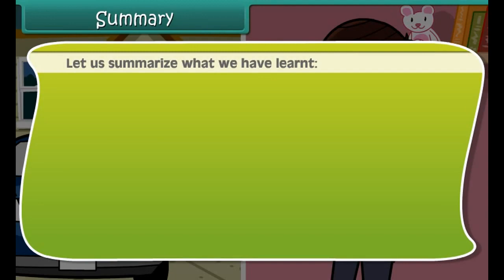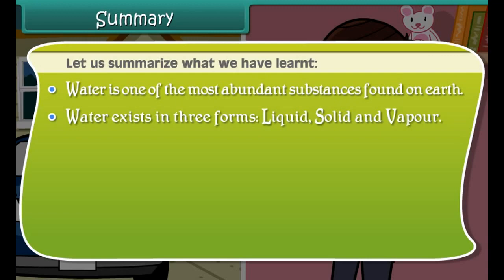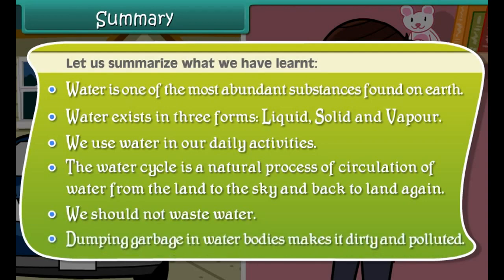Let's summarize what we have learned so far. Water is one of the most abundant substances found on earth. Water exists in three forms: liquid, solid and vapor. We use water in our daily activities. The water cycle is a natural process of circulation of water from the land to the sky and back to land again. We should not waste water. Dumping garbage in water bodies makes it dirty and polluted. Save water.